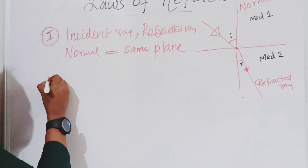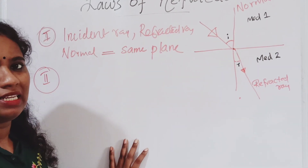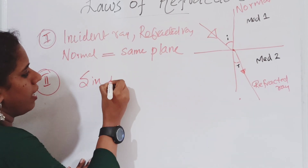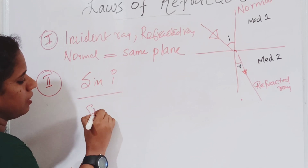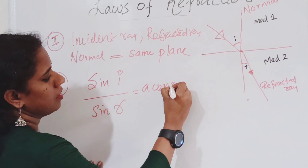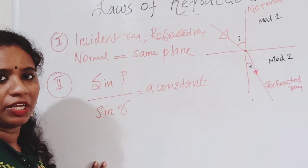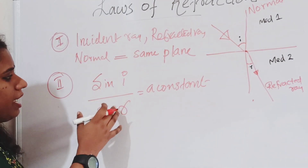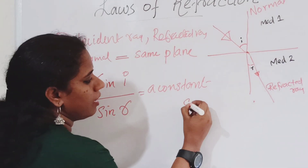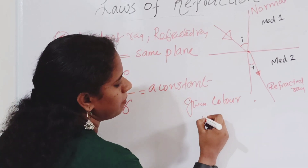The second law of refraction states that the sine of the angle of incidence to the sine of the angle of refraction is a constant, for a given color of light and a given pair of media.